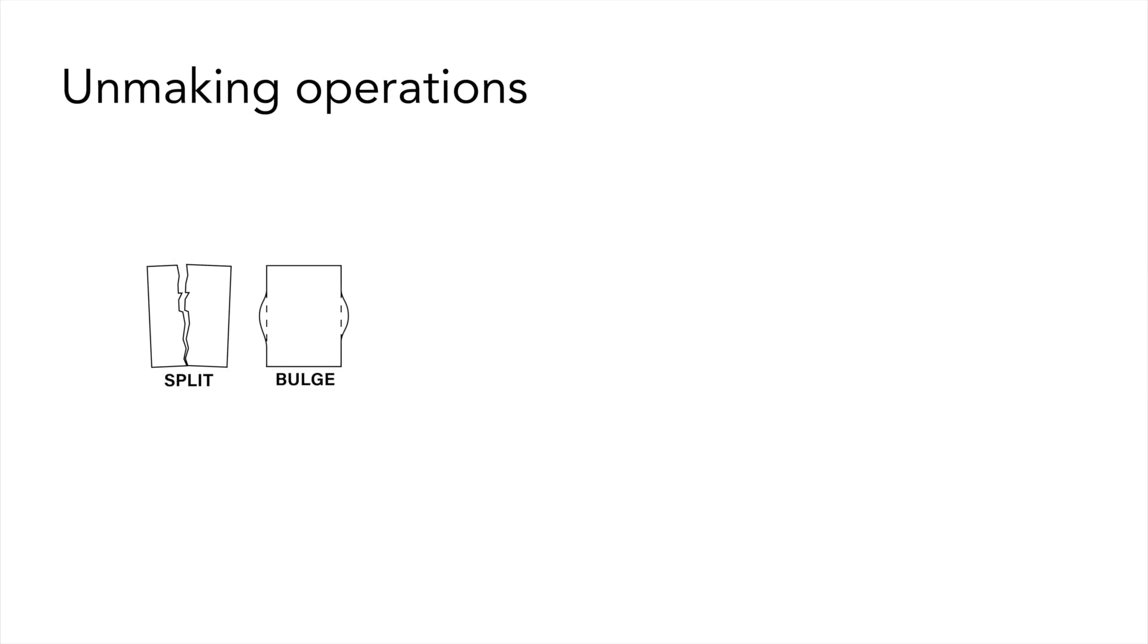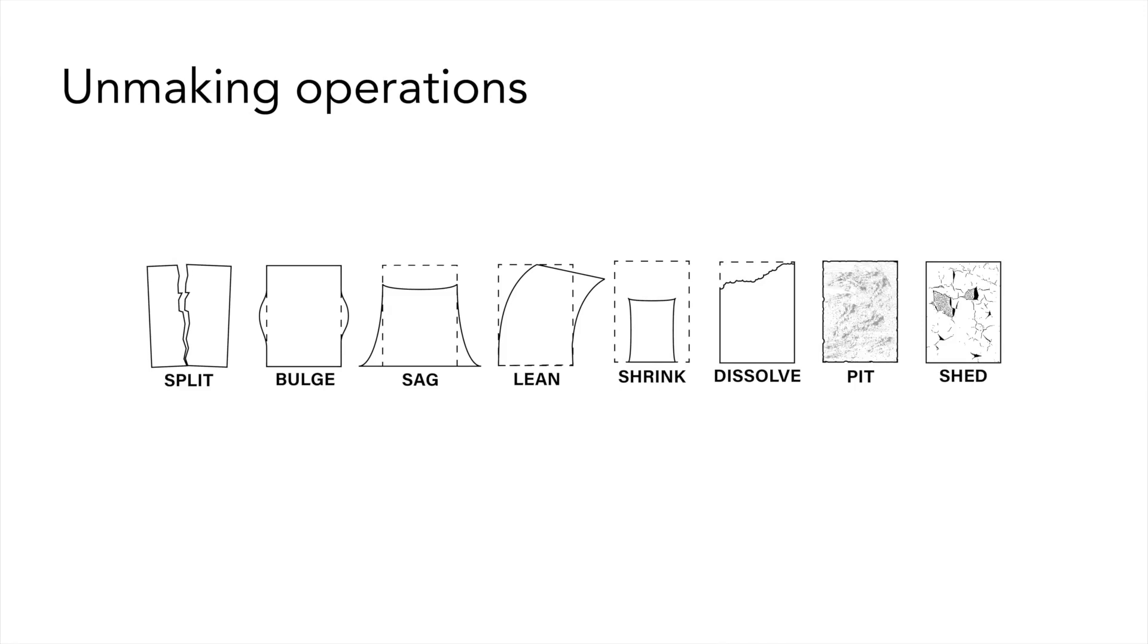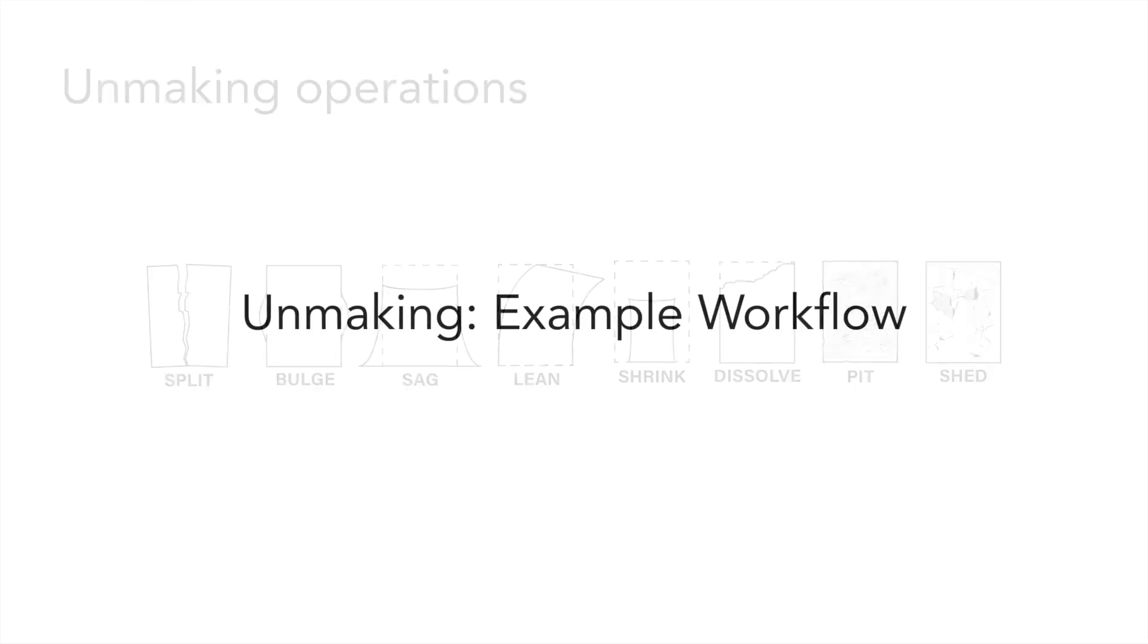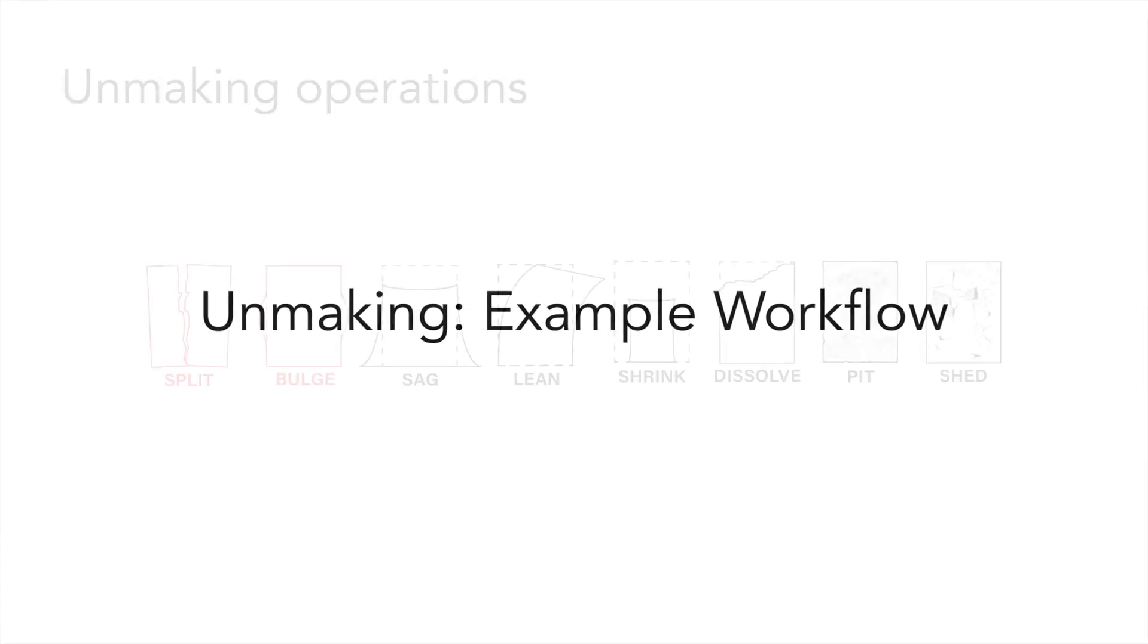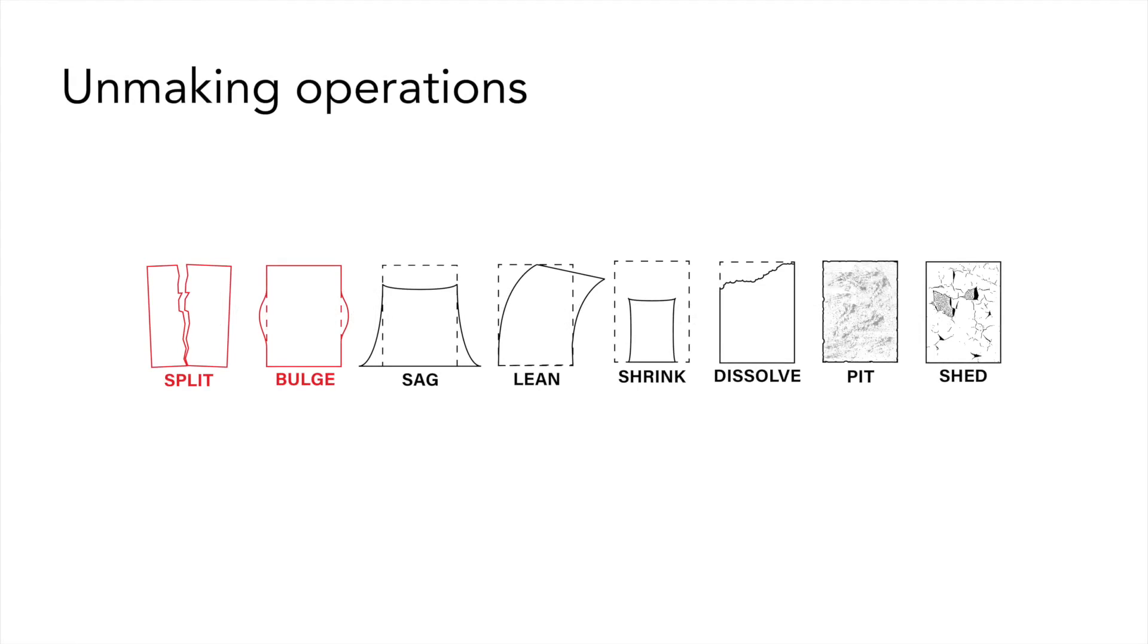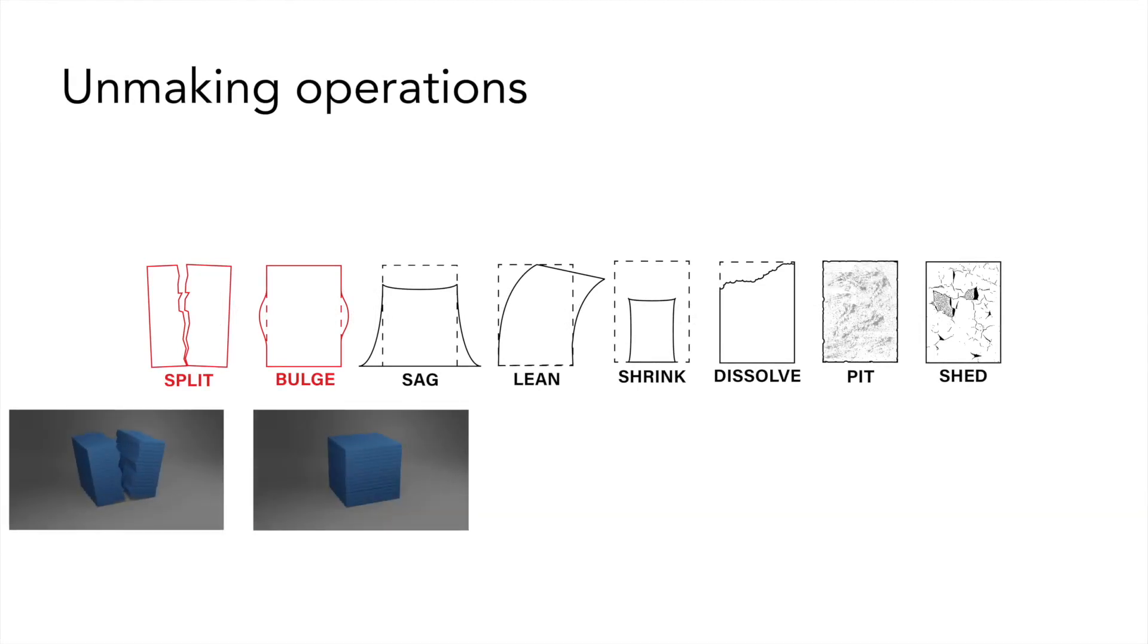We propose an initial set of expanded design vocabulary such as split, bulge, sag, lean, shrink, dissolve, pit and shed. We'll now walk through an unmaking workflow that we have developed to operationalize splitting and bulging. Unmaking can be implemented with a variety of materials and fabrication strategies.